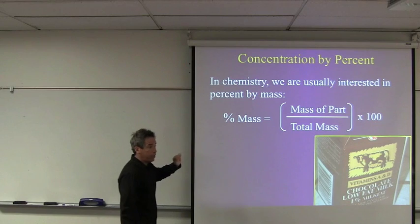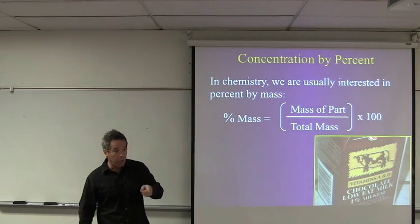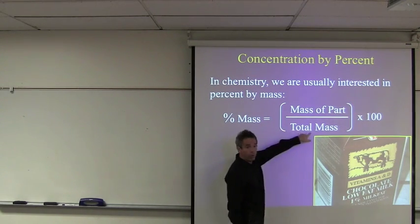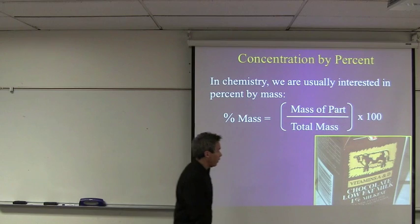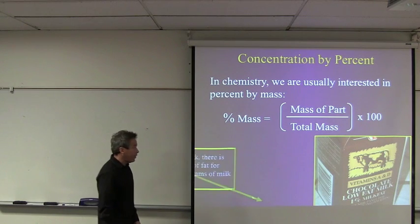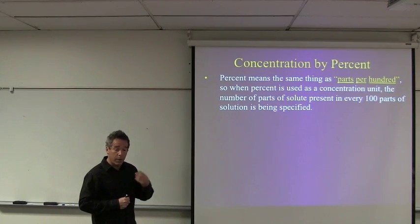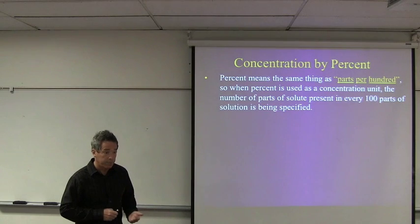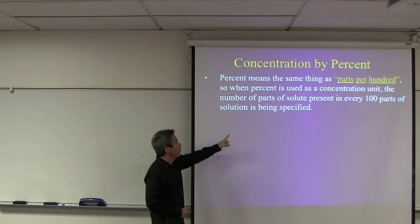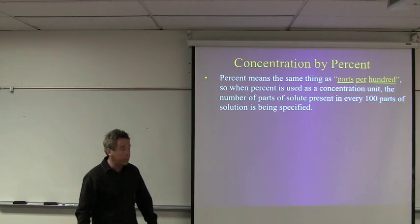That would give us the ratio of guys to students in the class, or the fraction of guys to students in the class. But we want the percent, we multiply that by 100. When you're talking about the concentration of a solution, we're going to talk about percent, sometimes by mass, sometimes by volume, and sometimes weight to volume. For percent mass, it's defined as the mass of the part over the total mass times 100.